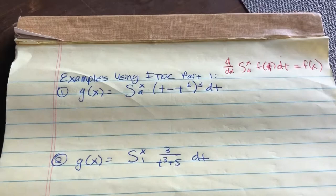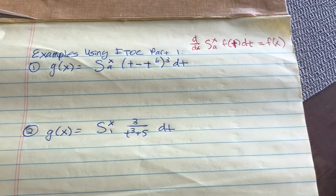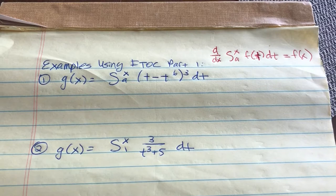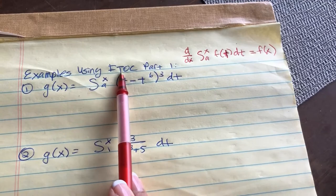Alright, so the next page of your worksheet should have four examples. This is straight out of your homework with a few slight changes. But if you can do these four problems, you should be good to go on your homework. The first problem uses the antiderivative and says: use the fundamental theorem of calculus part 1 to solve this.